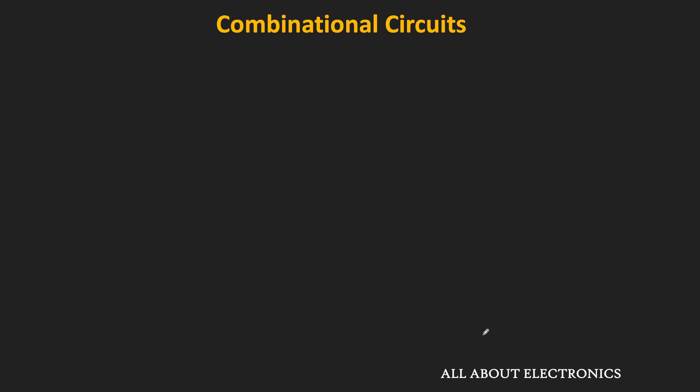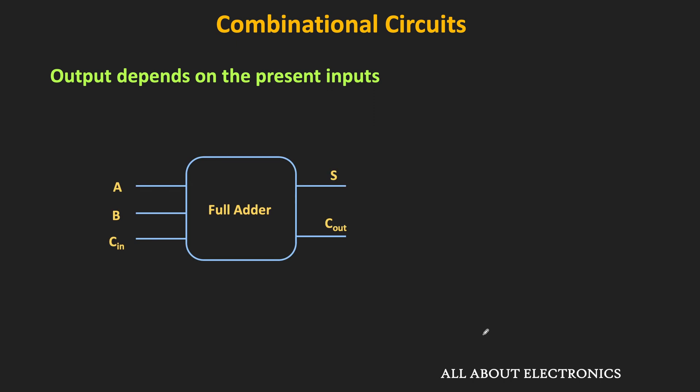In combinational circuits, the output depends only on the present inputs. For example, if we take the case of the full adder, it consists of 3 inputs and 2 outputs. If the inputs are 0, 1, 0, then the sum output will be 1 while the carry output will be 0.